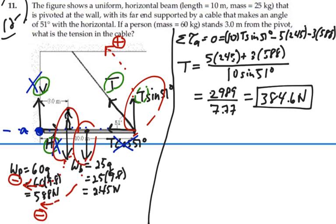The tension in the cord is 384.6 Newtons. We found it by using just one equation for torque about point A — a very elegant, nice way to do this problem.